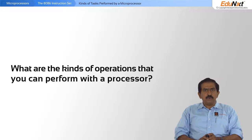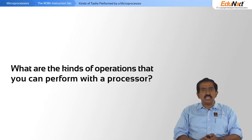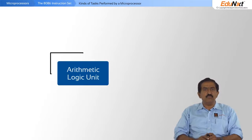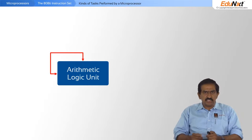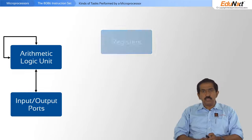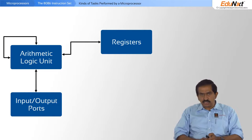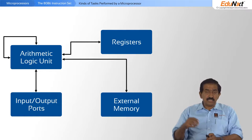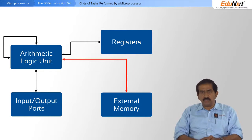So what are the kinds of operations that you can perform inside a processor or with the processor? One is you can move data within the ALU itself — the arithmetic logic unit — so reads, writes, additions, etc. all happen within the ALU. You can also move data between the ALU and the input/output ports, between the ALU and the various registers, and between the ALU and the external memory, so data can flow in or out from external memory.